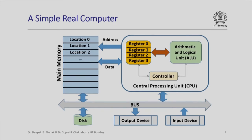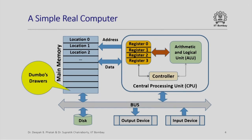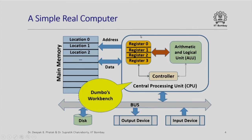Here is a very high level block diagram of a simple real computer. I am going to explain each of these color coded parts in more detail. There is something labeled as main memory, with locations 0, 1, 2 and so on. These are like Dumbo's drawers — Dumbo needs named drawers to store and retrieve information. So this main memory in a real computer is much like Dumbo's drawers.